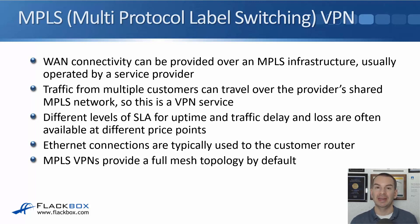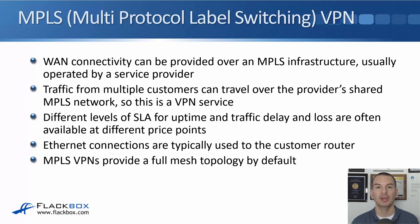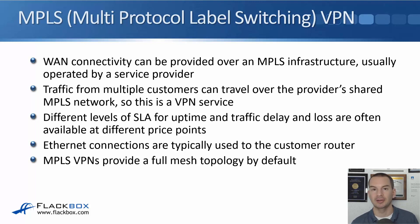This is different than a VPN going over the internet. A VPN going over the internet could be passing through multiple service providers, so it's impossible to get a single unified SLA for the end-to-end traffic. But when you're using an MPLS VPN it's going to be with one service provider that owns the MPLS network, so that service provider can give you guarantees for the uptime, the delay, and the loss. They will often have different guarantees at different price points — maybe a gold class, a silver class, and a bronze class.